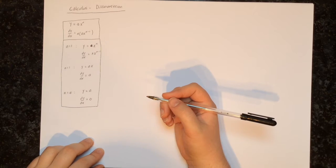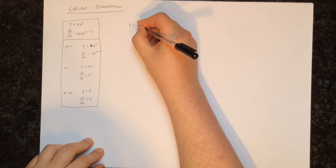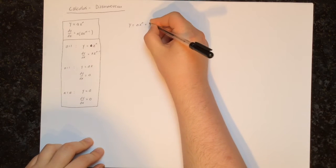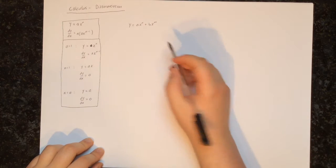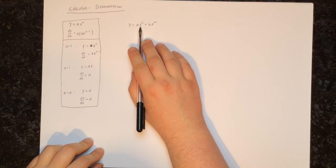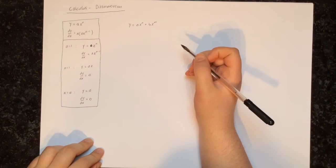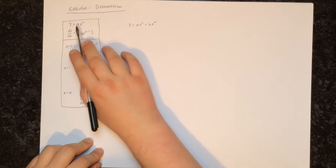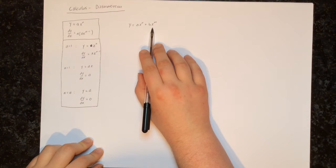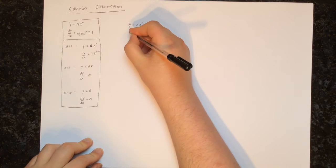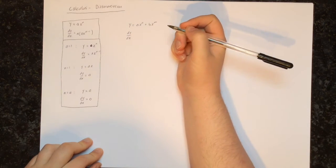In this video, we are going to look at what happens when y equals ax to the power of n plus bx to the power of m. That is, when y is some multiple of x to some power plus another multiple of x to another power. So instead of letting y equal some multiple of x to some power, we're taking that and adding on another multiple of x to a different power. And we want to know what is the derivative of that.